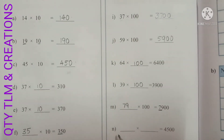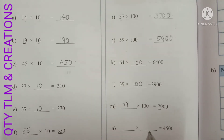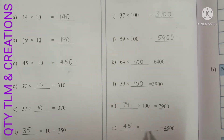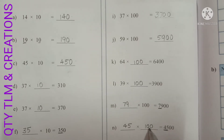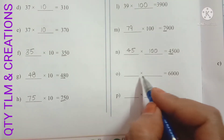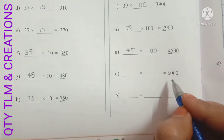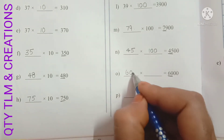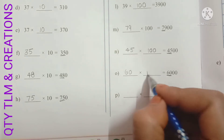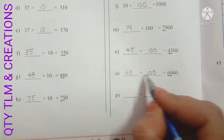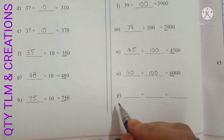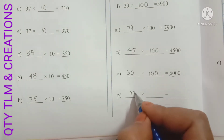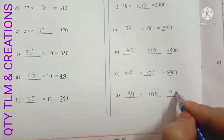Next N: dash into dash, product is 4500, so multiplicand is 45 and we multiply with 100: 45 into 100 equals 4500. Next O: dash into dash equals 6000, so multiplicand is 60, multiply with 100: 60 into 100 equals 6000. Next P: we may multiply any number with 100; for example, 99 into 100 equals 9900.